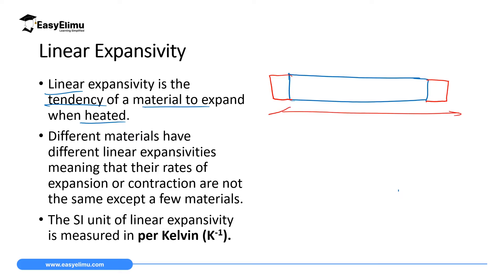Liquids and gases don't expand in a common direction or in a line — they expand randomly: upward, downward, sideways. But solids expand linearly. Different solids have different linear expansivities, so they expand and contract at different rates. For example, magnesium, aluminium, and copper will all expand but not by the same extent.